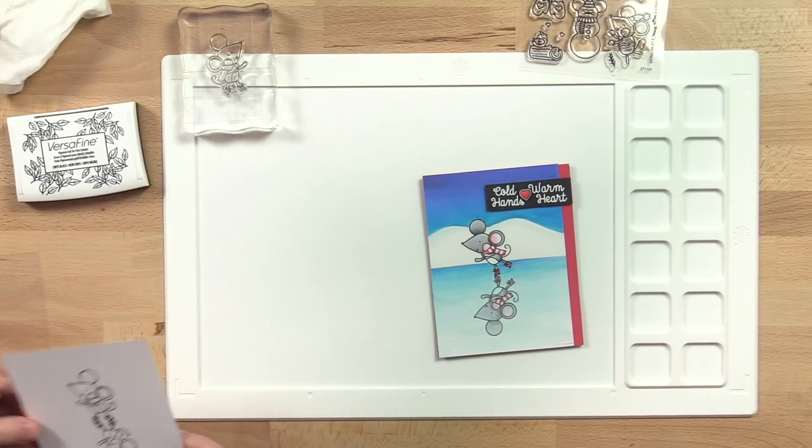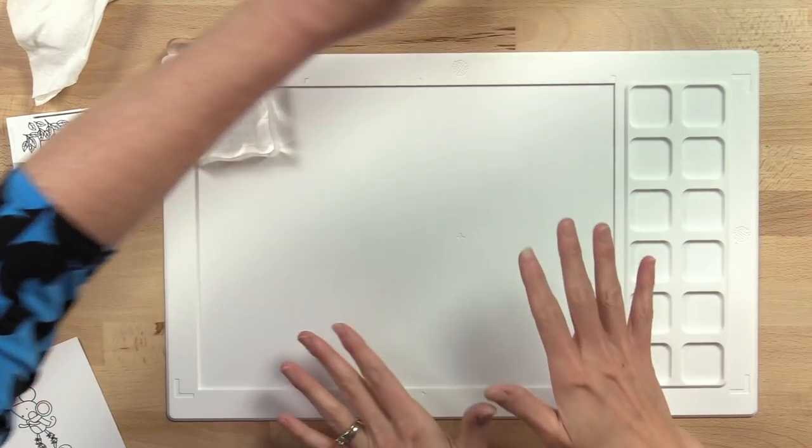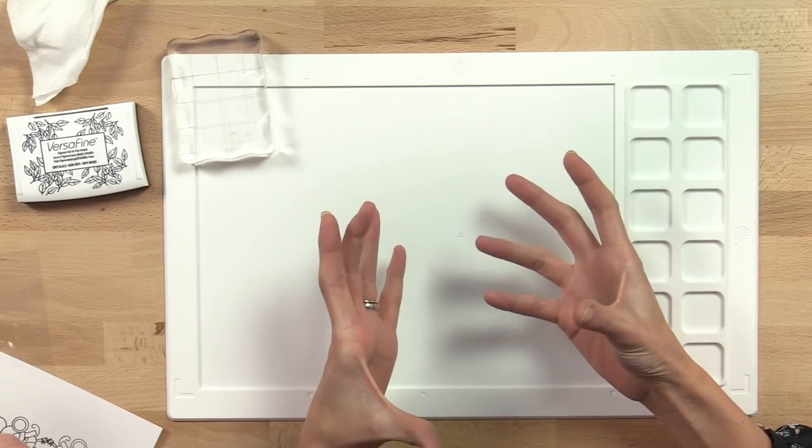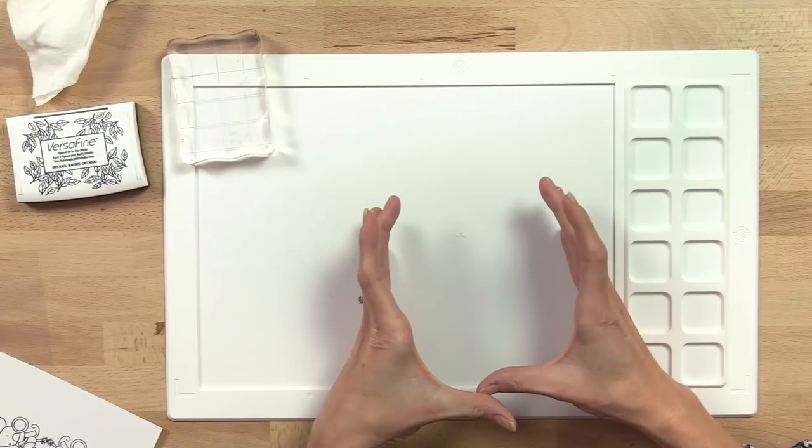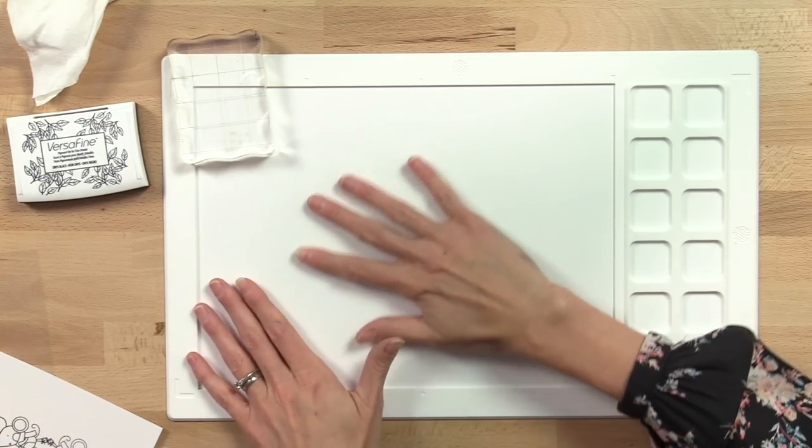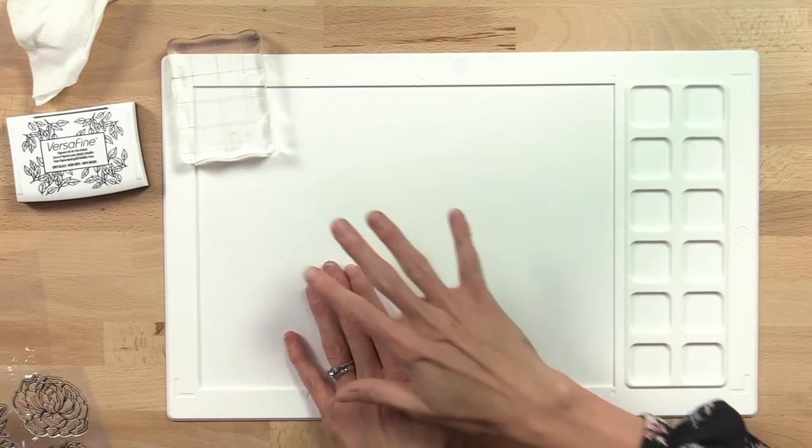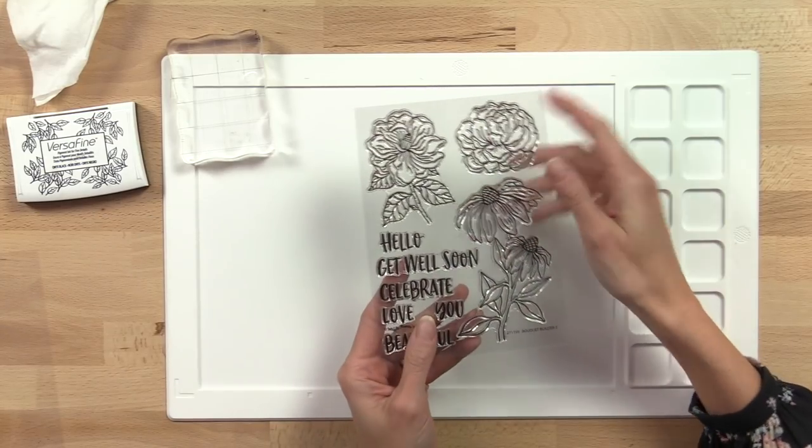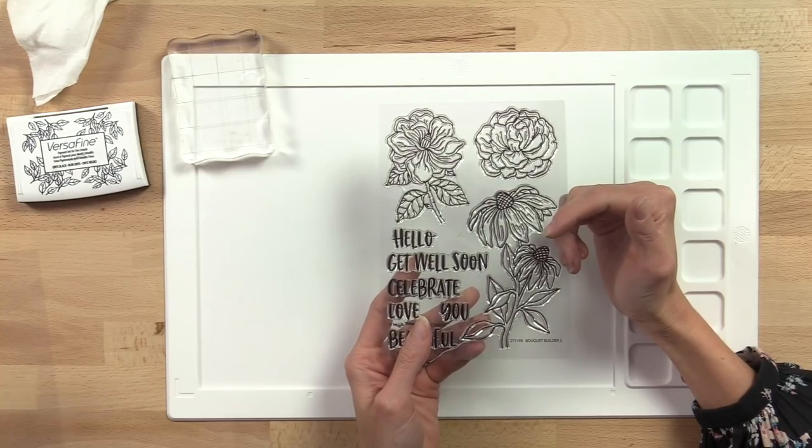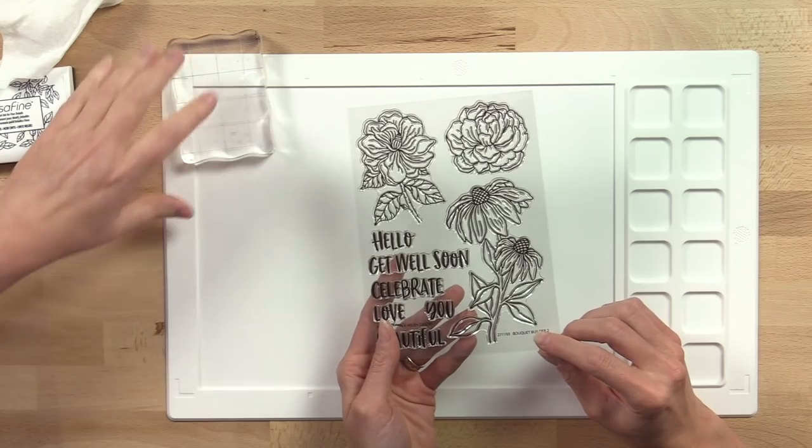So let's move on to a different way. One really nice thing about the mat is that it's so large. A lot of time with mirrored stamping, you're limited to the size of your mirrored stamp or your acetate. But here you have a very large surface to stamp on. I'm going to show you not only a really large stamp, we're going to use this beautiful flower here, a Black Eyed Susan from the Bouquet Builder 2 stamp set.